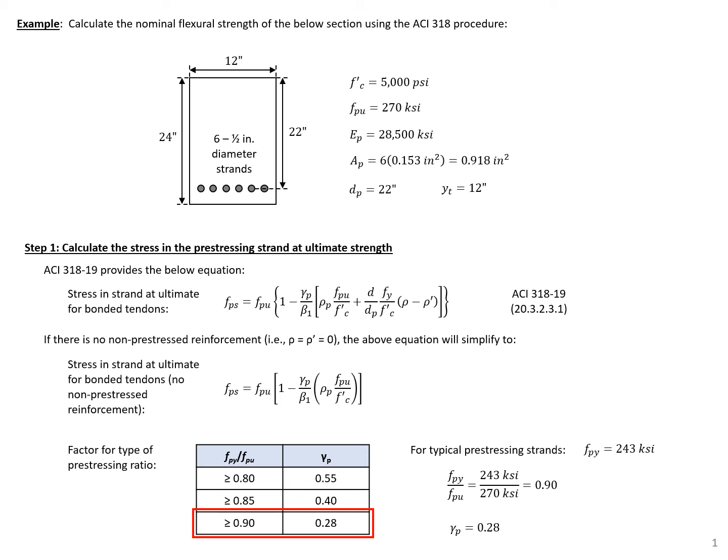In this example problem, we're going to calculate the nominal flexural strength of the rectangular section shown below using the ACI 318 procedure. We're given information about the section: the width, the height, and the depth of the strands.